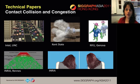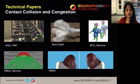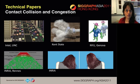In the session called Contact, Collisions, and Congestion, we have a paper that lets you do large-scale traffic simulation using hybrid agent and continuum methods. A low-cost approach to fluid dynamic simulations. An algorithm for interference-aware geometric modeling. A new approach for level of detail for collisions and crowd simulations based on our understanding of human perception. And an approach for robust hair dynamic simulation that captures Coulomb friction.